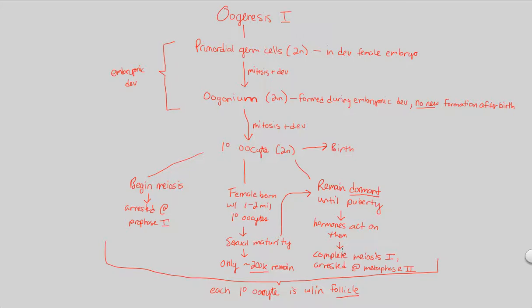Right now, we're still developing and not quite there yet. We have to eventually reach the stage of a secondary oocyte, and that's what we'll cover in the next video to complete the oogenesis process.